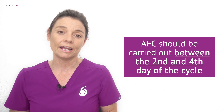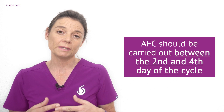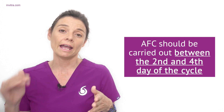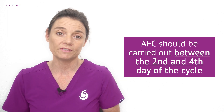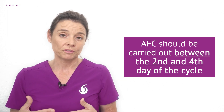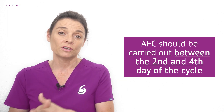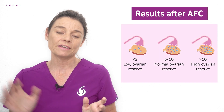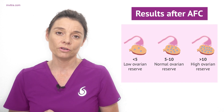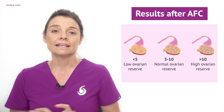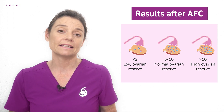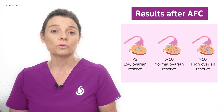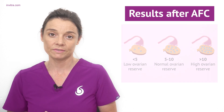In order for this test to be accurate it should be carried out between days two and four of the menstrual cycle, when the antral follicles should be visible. Day one of the menstrual cycle is counted as the first day of your menstrual period. If the specialist counts between five and ten antral follicles in each ovary the test is deemed to be normal. Less than this is a low ovarian reserve and more than this would indicate a high ovarian reserve.